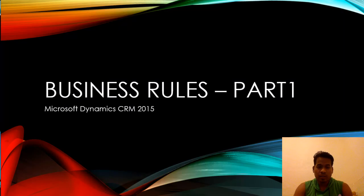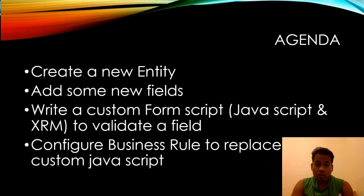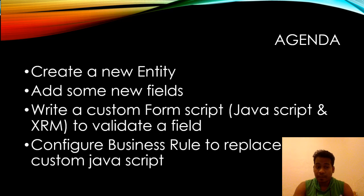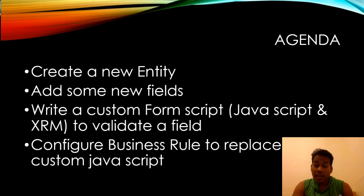Now I will show you my agenda for this presentation. I'll show you the business rules configuration, which includes four things: how to create a new entity, how to add some fields to that entity, how to write a custom form script using JavaScript and XRM to validate a field, and then how to configure the same script logic in a business rule.